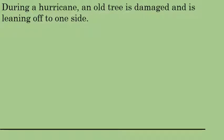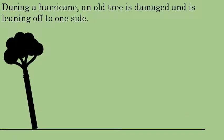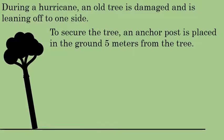Let's solve a problem where trigonometry, namely the Law of Cosines, is required. Let's say that during a hurricane, an old tree is damaged and it's leaning off to one side. To secure the tree, an anchor post is placed in the ground five meters from the tree.